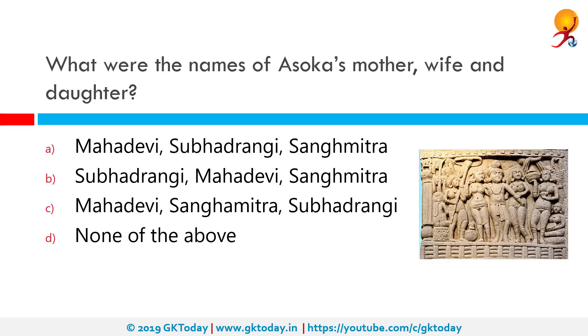What were the names of Ashoka's mother, wife and daughter? The correct answer is: Ashoka's mother was Subhadrangi, his wife was Mahadevi, and his daughter was Sanghamitra.